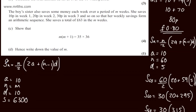So we can go ahead and substitute this in. We can say that 6,300 equals n over 2 so this is m over 2. We'll have 2 lots of a which is 20 plus n minus 1 so this will be m minus 1 multiplied by the common difference of 10.